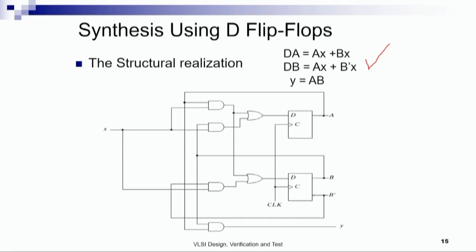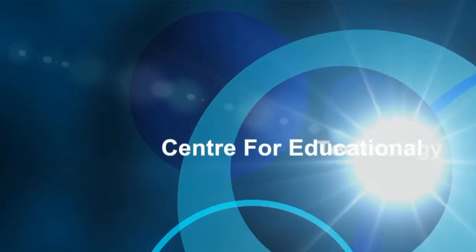After obtaining the input equations and output equation, we can obtain a structural realization of the circuit. In this realization, the gates produce AX, BX, and their combination gives D_A = AX + BX. Similarly, for D_B the input is AX + B̄X, and Y = AB. This completes the module on logic synthesis.